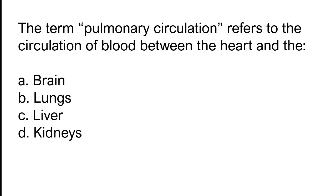The term pulmonary circulation refers to the circulation of blood between the heart and: brain, lungs, liver, kidneys. The correct answer is option B. The term pulmonary circulation refers to the circulation of blood between the heart and the lungs.